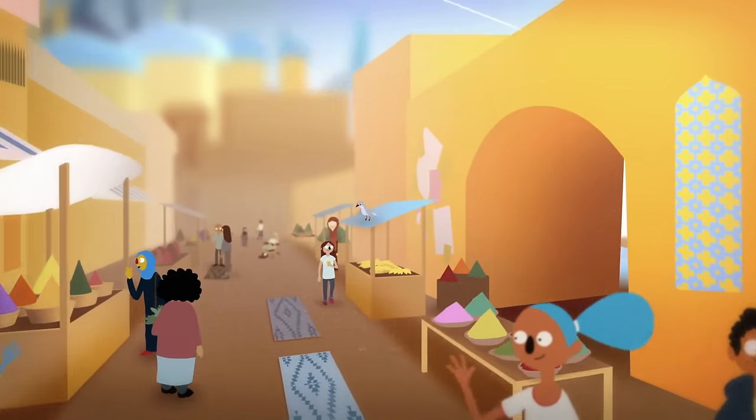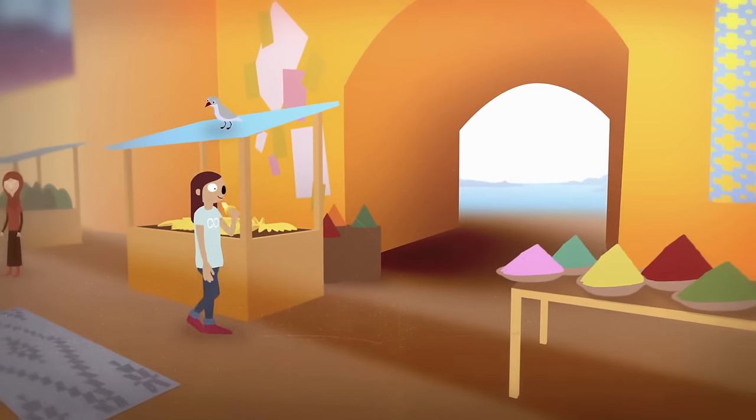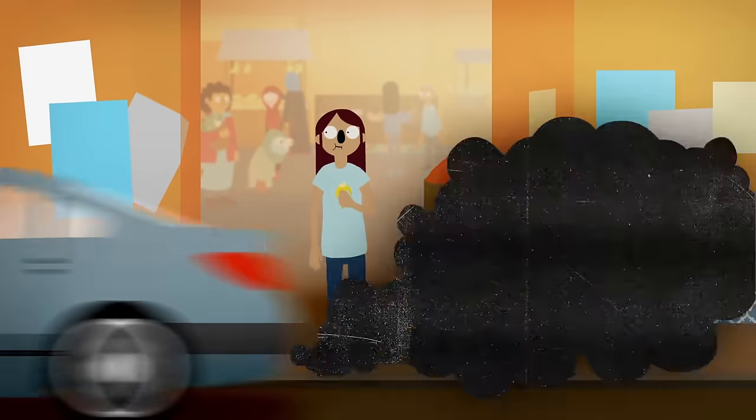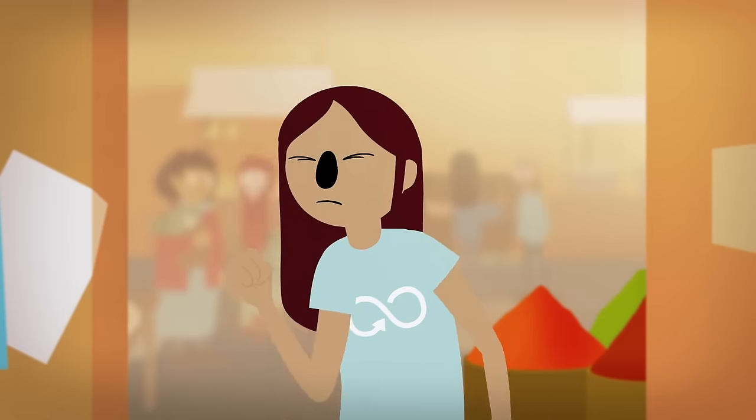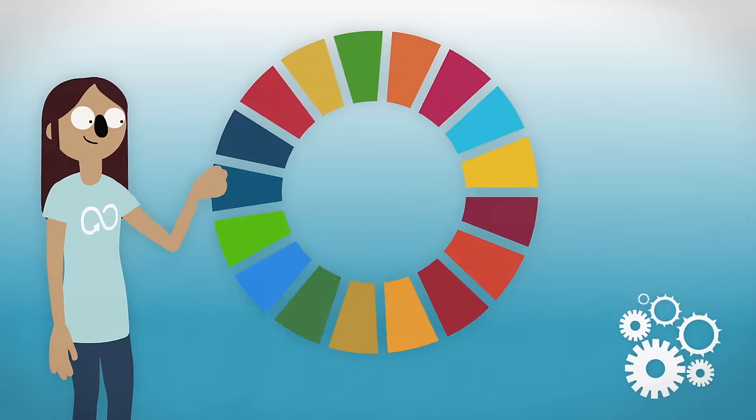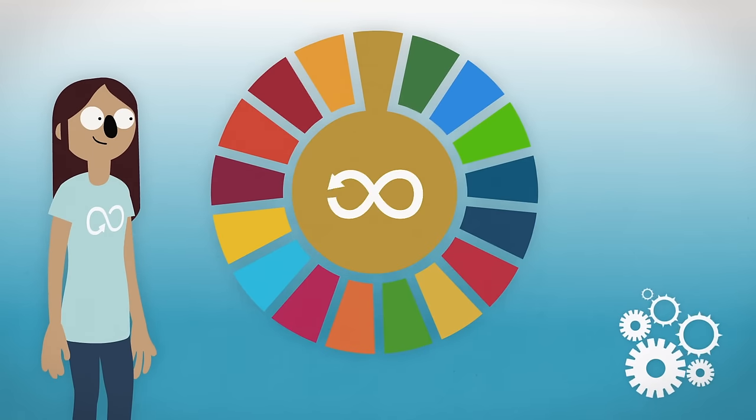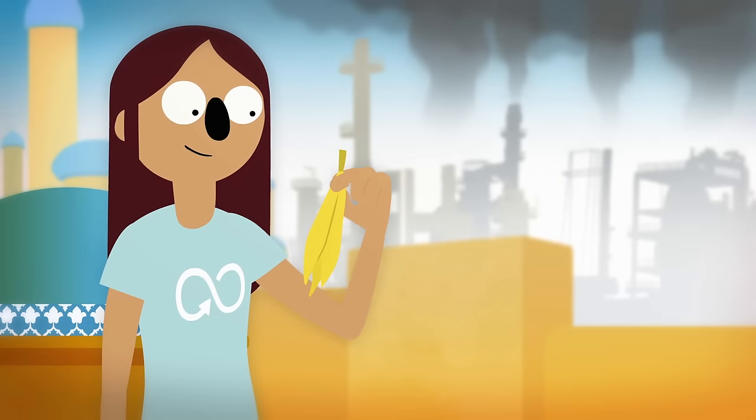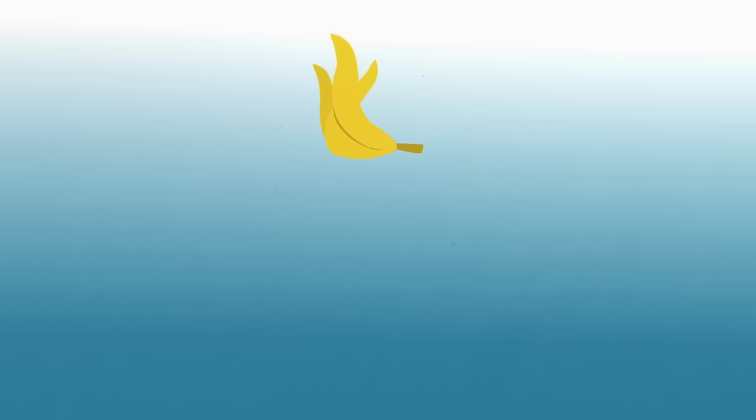First stop is Istanbul in Turkey, where we meet Elif. She's an inventor. Like many big cities, there's a lot of pollution in Istanbul. Some caused by petroleum-based plastics. Elif wasn't happy about that and wondered what she could do. So she invented a new natural plastic made from banana skins.